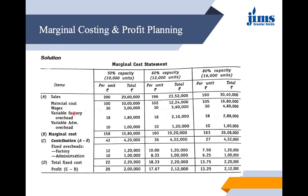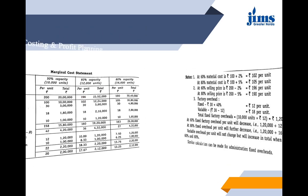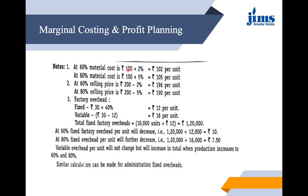To solve, we start from sales, then compute material cost, wages, variable factory overheads, and variable administration overheads to obtain marginal cost. Contribution is obtained by subtracting marginal cost from sales. At 60% capacity, material cost increases by 2%, becoming Rs. 102 per unit; at 80%, it increases by 5%, becoming Rs. 105 per unit. Selling price at 60% falls by 2% to Rs. 196 per unit; at 80%, it falls by 5% to Rs. 190 per unit.